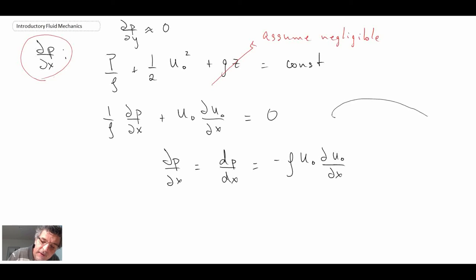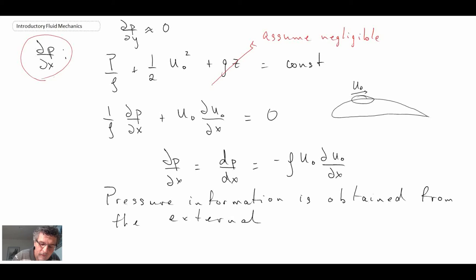Where u naught is the external flow. If we have, again, the little picture of the airfoil, let's say we're examining the boundary layer here, u naught would be the external flow outside in the potential flow area. That gave us an expression for dp by dx, which is good. Essentially what it tells us is that we can solve the inviscid flow about a body and then bring that pressure into the boundary layer. Pressure is brought in from the external flow.